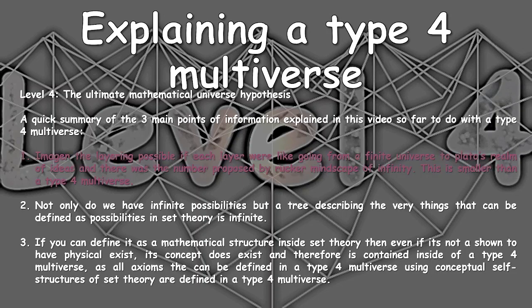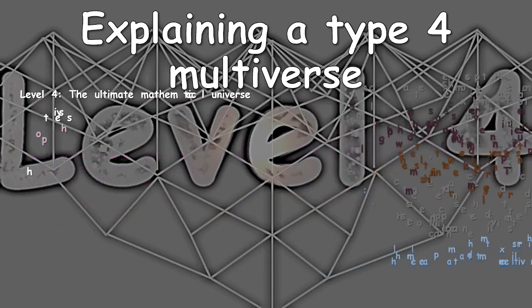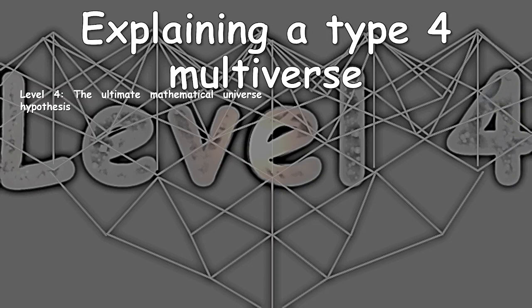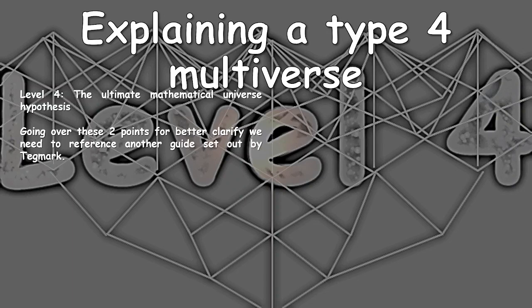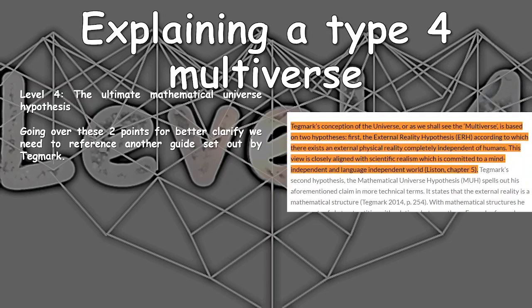One of these descriptions is an analogy, so it's not the best at outlining what Tegmark means. And another is not very friendly to the average viewer who doesn't understand how diverse set theory is. So I'll be using another paper to try and make these two descriptions simpler. Going over these two points for better clarity, we're going to need a reference from another Tegmark guide, which I'll have read out word for word.